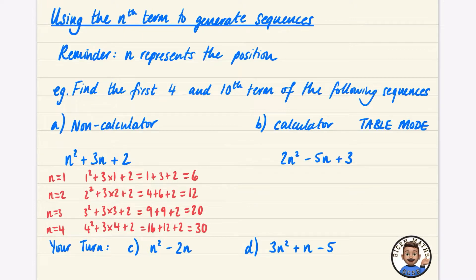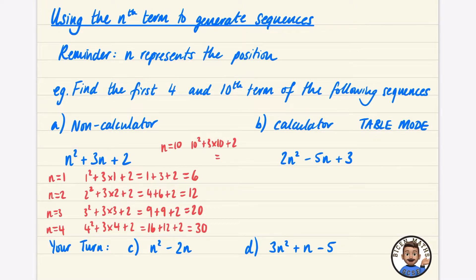You can see it's a quadratic because the terms go up by six, eight, ten — and the second difference is two, two, two. Now I just need to find the tenth term: when n equals ten it's ten squared plus three times ten plus two, which is one hundred plus thirty plus two — that's one hundred and thirty-two.